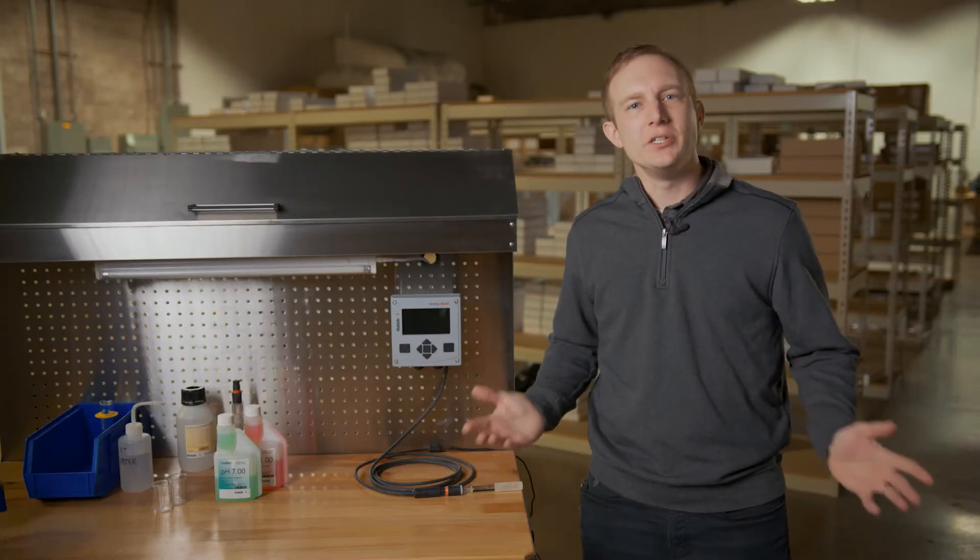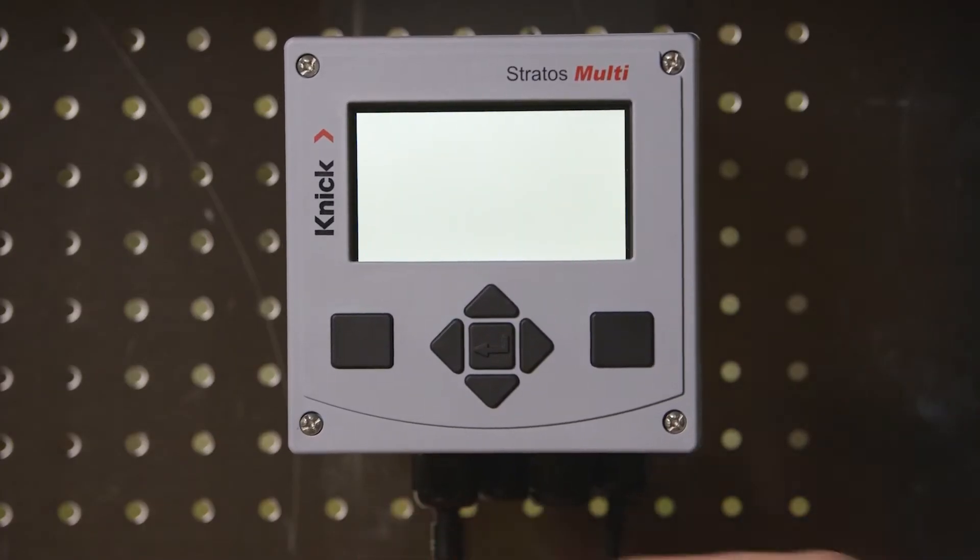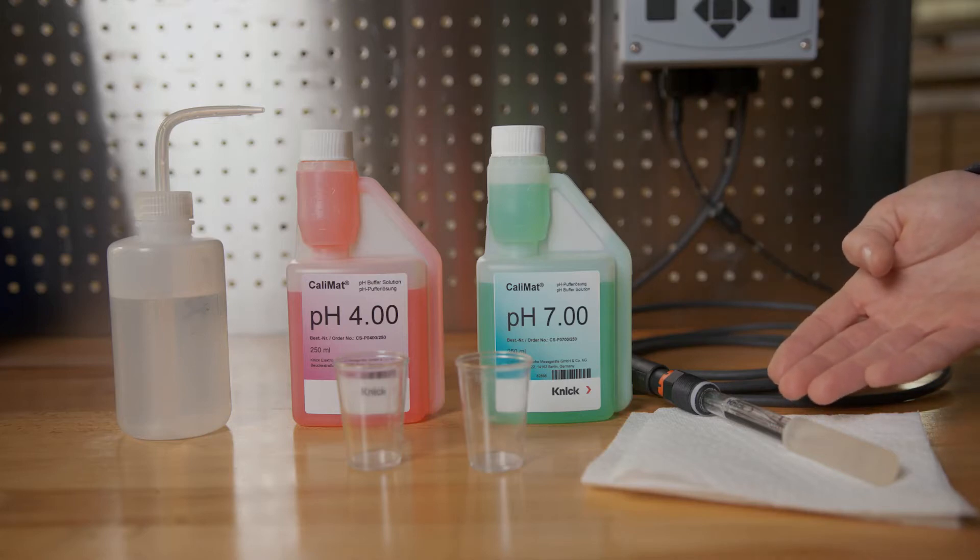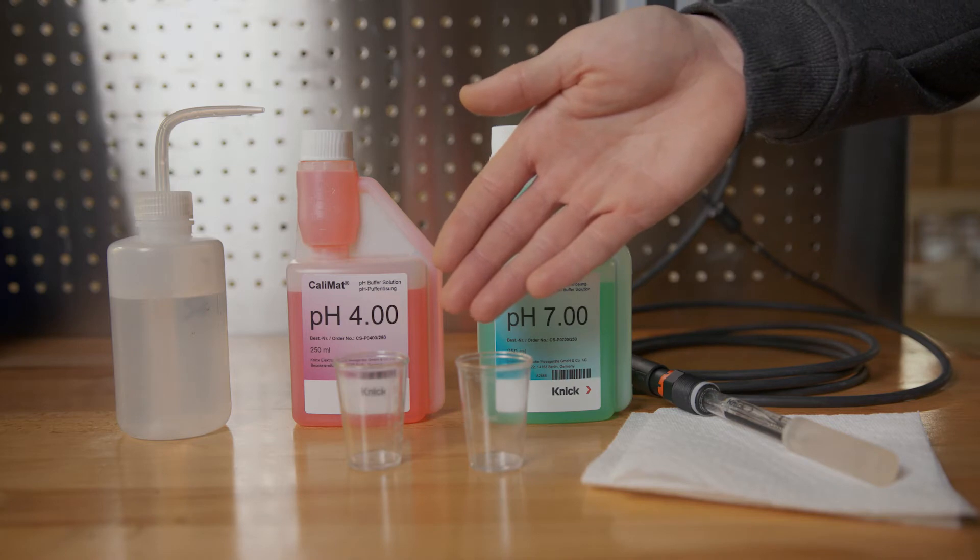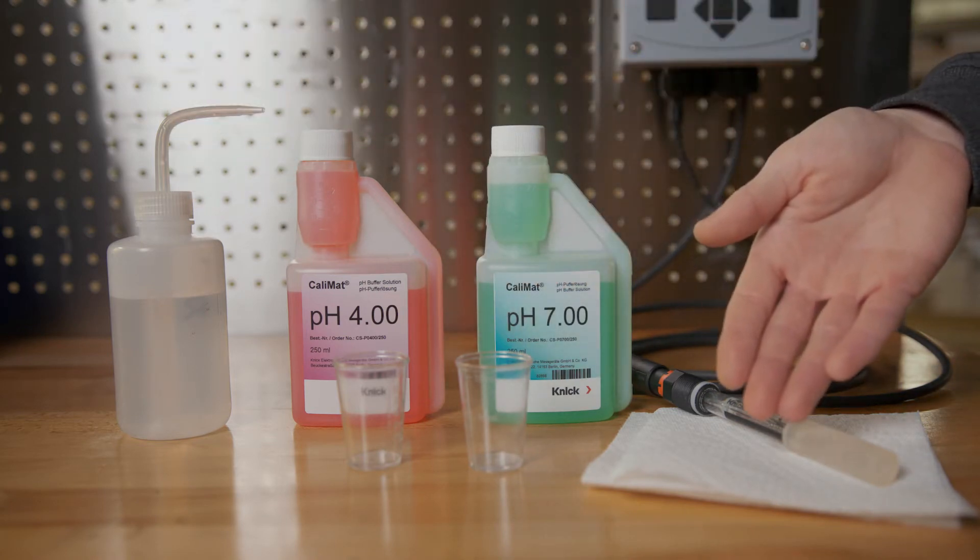To perform a calibration you will need a Stratus Multi transmitter that has been powered up with a MemoSense cable connected, a MemoSense pH sensor, at least two buffers with clean containers to pour them in, rinsing water, and a clean cloth to dab the sensor dry.